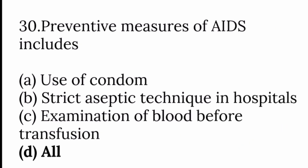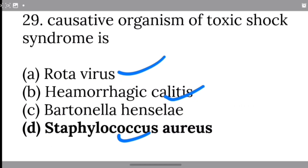Preventive measures of AIDS include use of condoms, strict aseptic technique in the hospital for needles and blood transfusions, and examination of blood before transfusion. So the answer is all of the above.